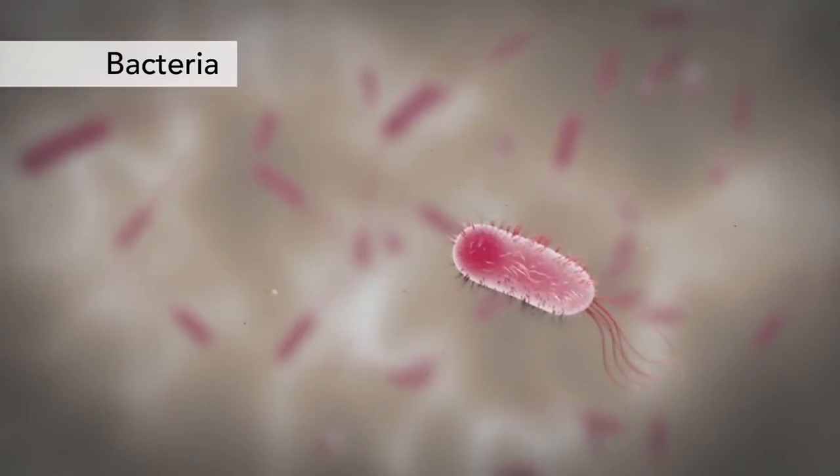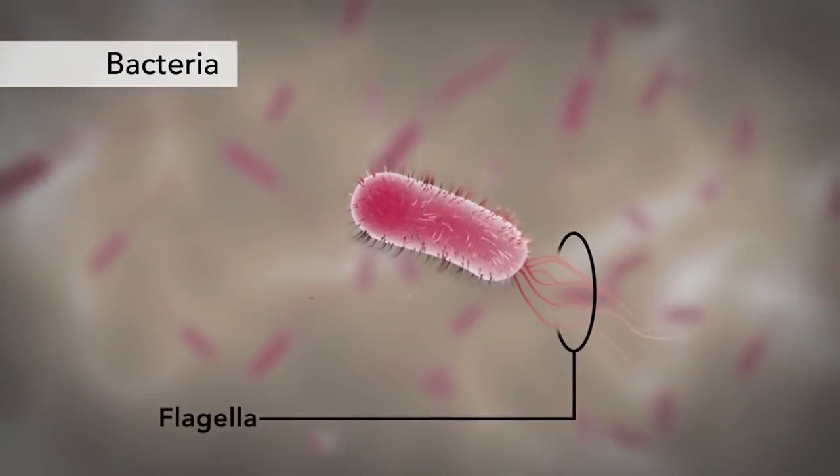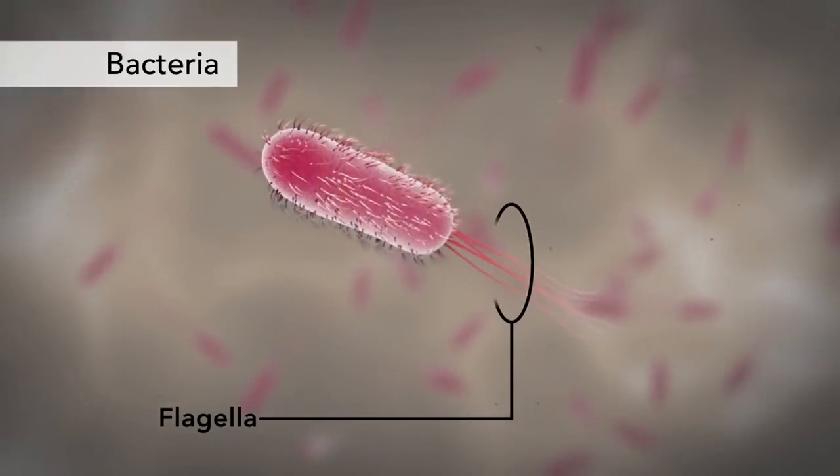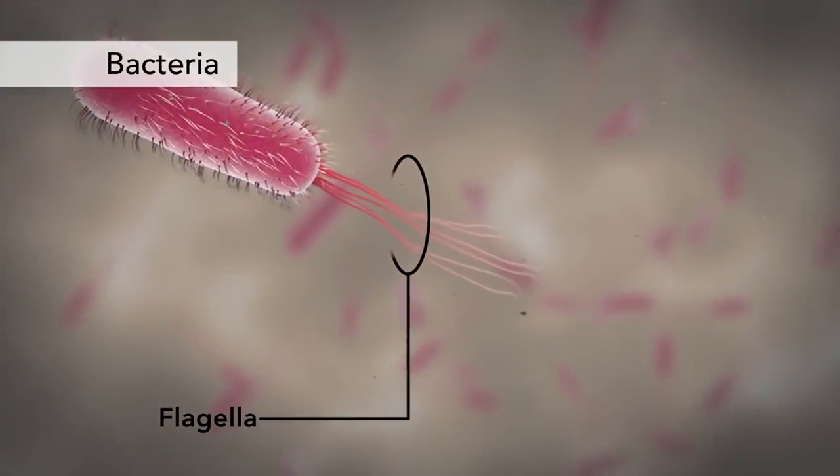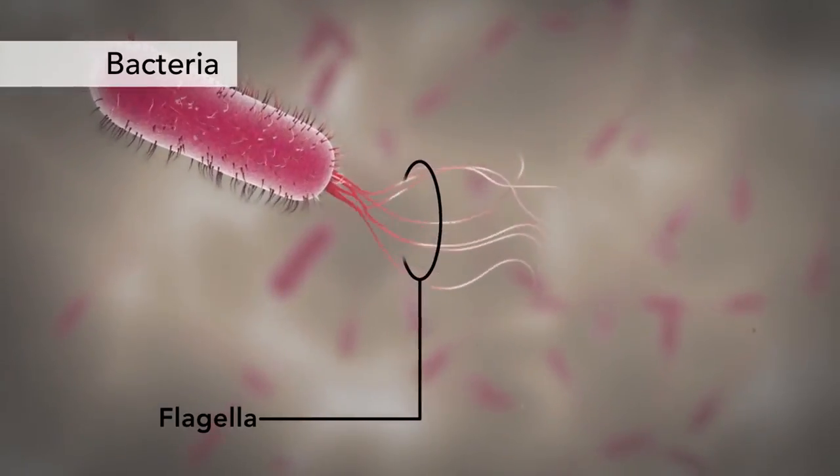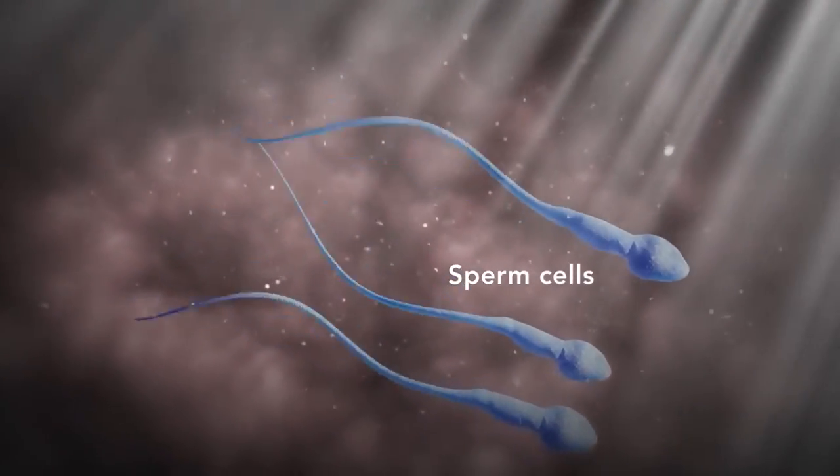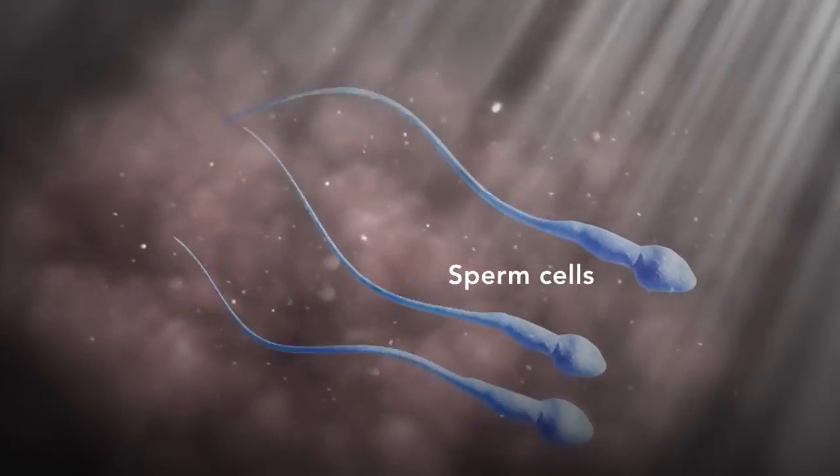Another unique feature in some cells is flagella. Some bacteria have flagella. A flagellum is like a little tail that can help a cell move or propel itself. The only human cell that has a flagellum is a sperm cell.